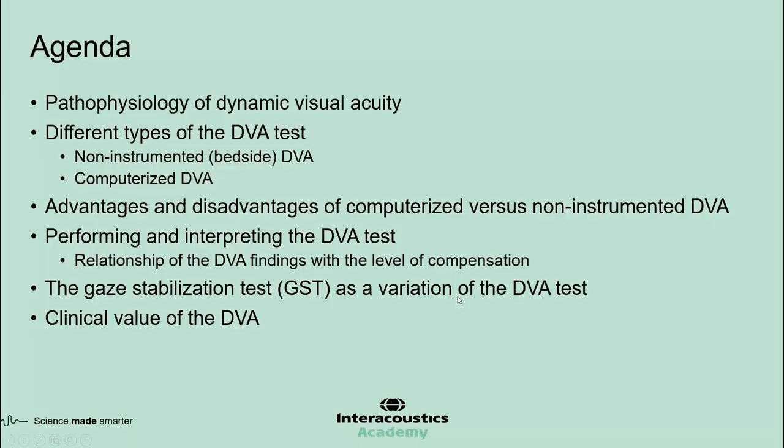Today's agenda includes a brief review of pathophysiology of dynamic visual acuity. Then we'll talk about different types of the DVA test: one non-instrumented or bedside DVA testing, and the other computerized DVA testing. A review of the advantages and disadvantages of the two methods will be presented. Then we'll talk about performing and interpreting the DVA test. We'll also describe the relationship of the DVA findings with the level of compensation.